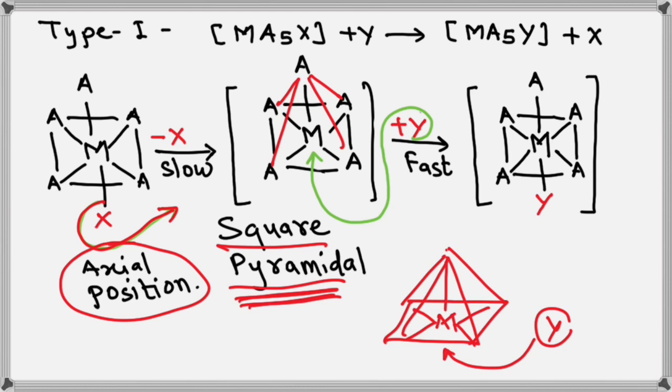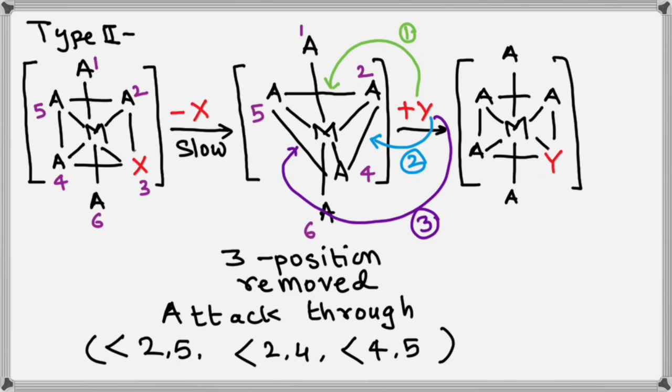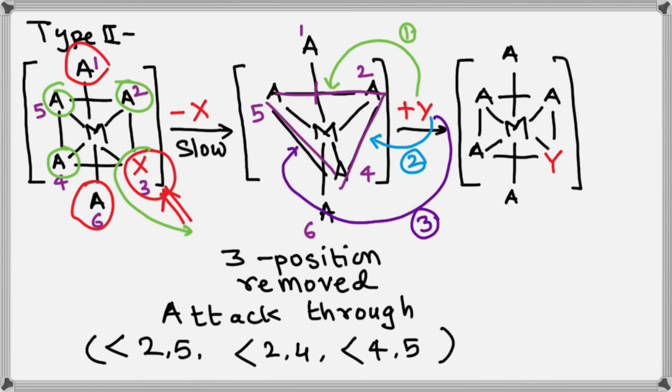When the X is located at equatorial position. This is equatorial position. Now what happens? The X gets detached from the complex. And there is a creation of a vacancy. There are three A positions present at equatorial position. And two groups are present at axial position. And they make stable structure, stable form of trigonal bipyramidal shape.